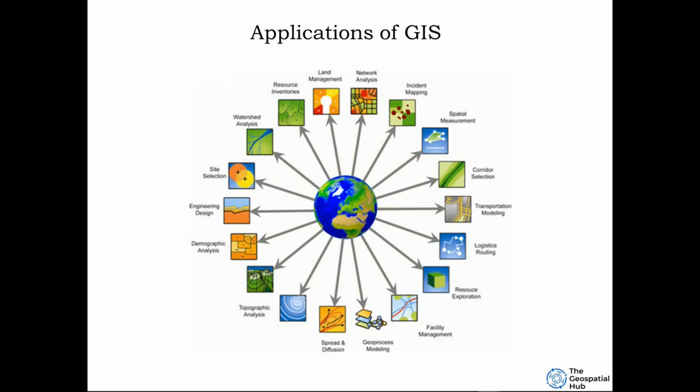GIS can also be applied for census and related statistical mapping. It can also be used by urban and regional planning for land use planning and management. GIS can also be utilized in security. The applications of GIS are limitless. So depending on the problem we are trying to solve determines how much we could actually apply GIS.